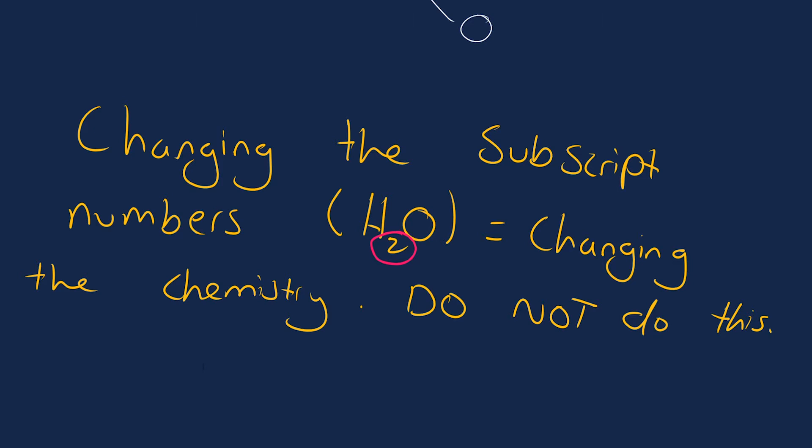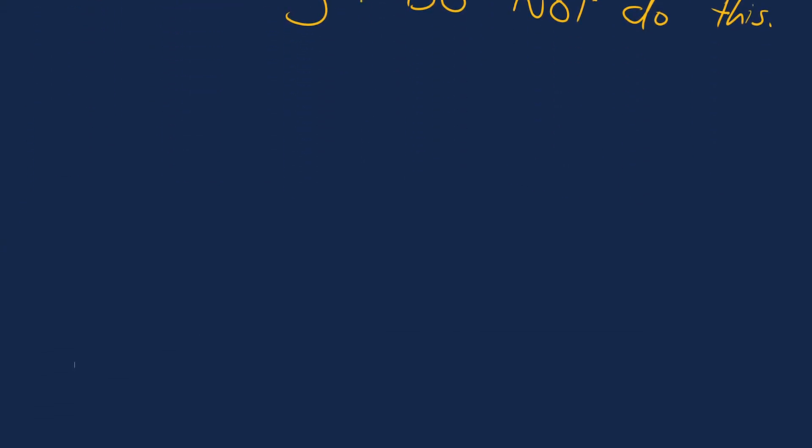What we're going to look at now is something a little bit different and often confusing when you're balancing an equation, and that is when you have brackets in a chemical equation.